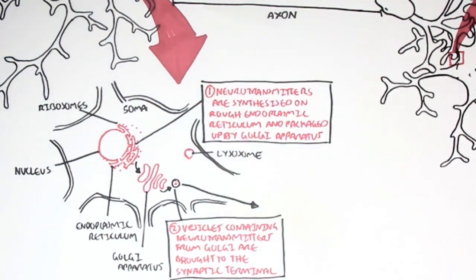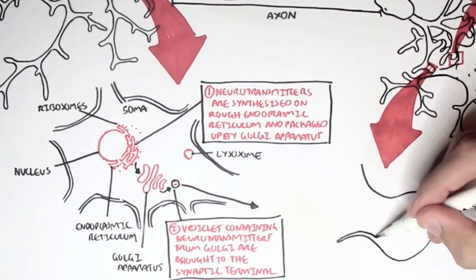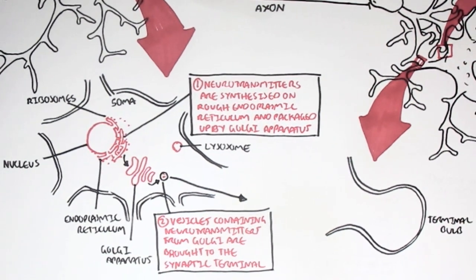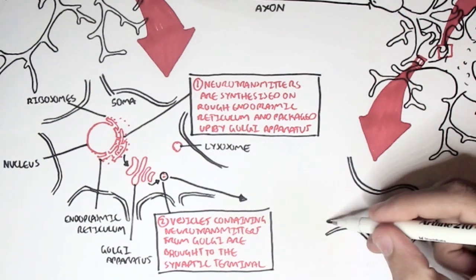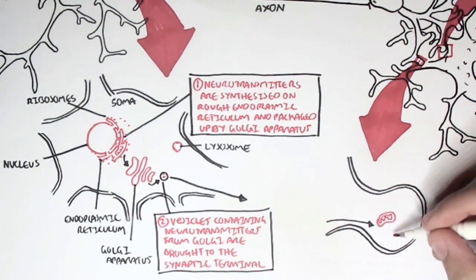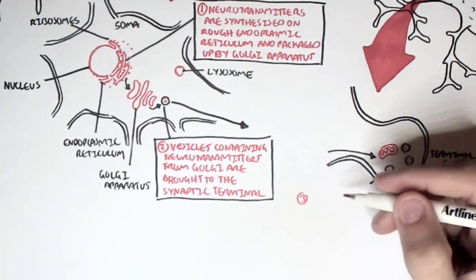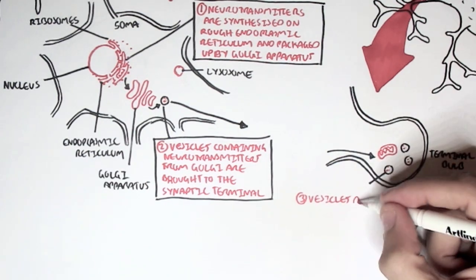Here we have the synaptic bulb of the synaptic terminal that we're zooming into. So these vesicles containing the neurotransmitters and also mitochondria, they move down via microfilaments or microtubules and they move to the terminal bulb here.